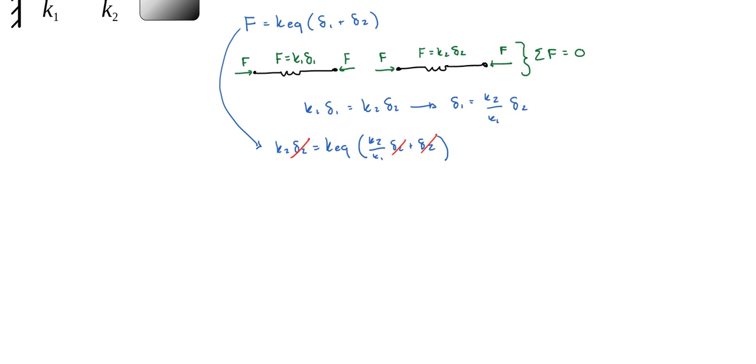So we're going to factor out K2 delta 2 is equal to equivalent stiffness times K2 over K1 plus 1.